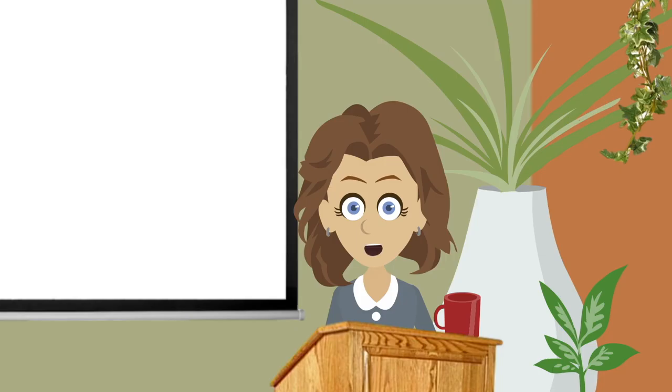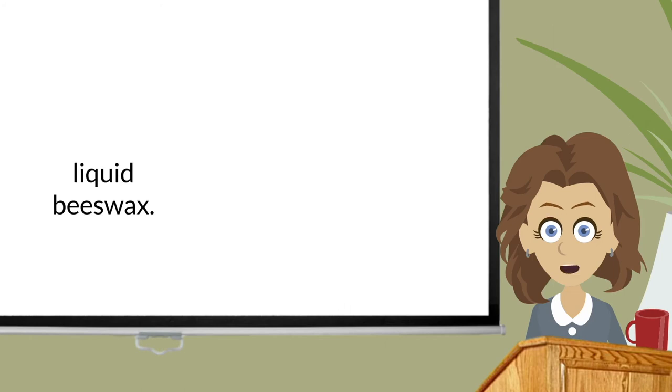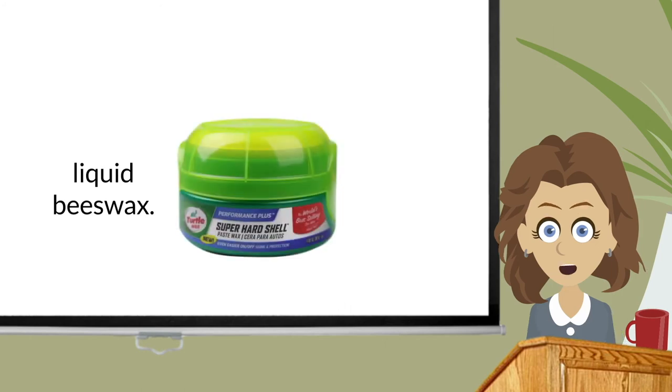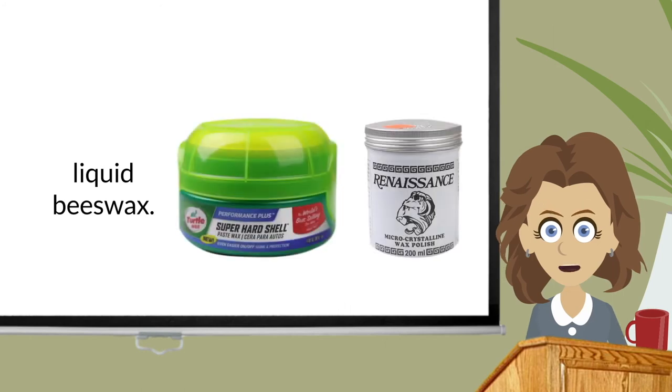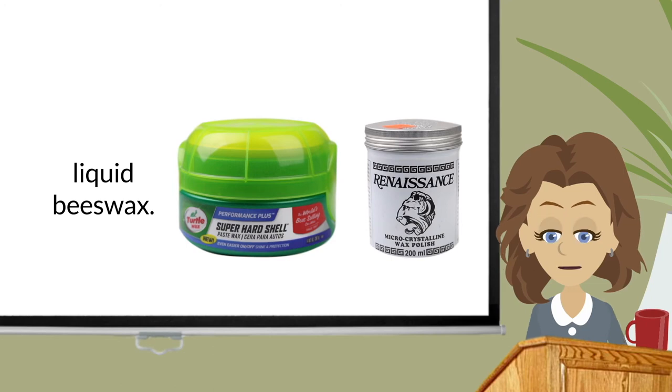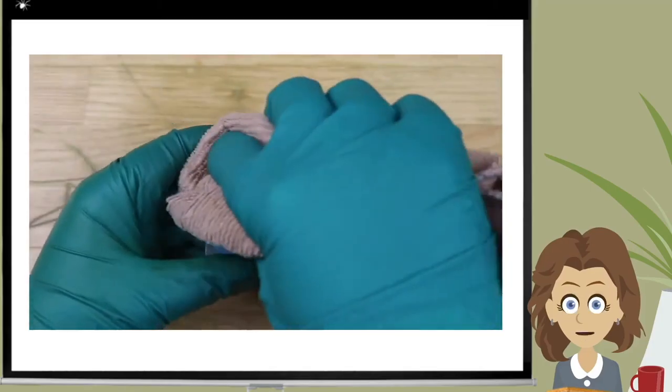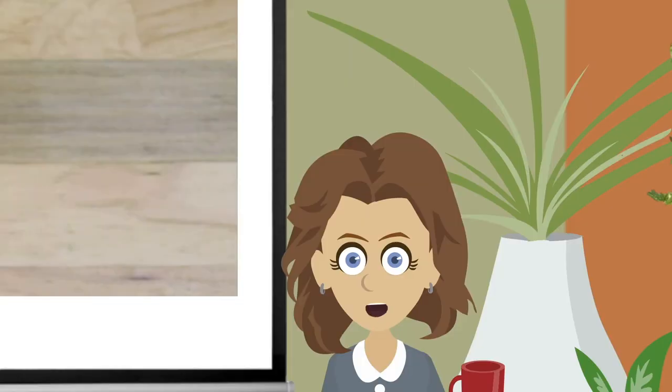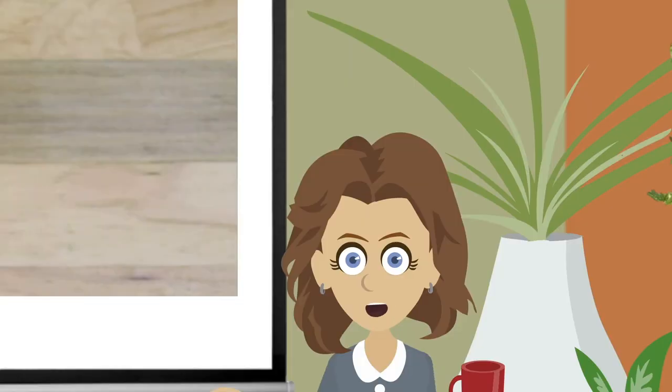Paste waxes are a very traditional way to seal patinas. Liquid beeswax, super hard shell turtle wax, or my favorite Renaissance wax polish will all do the job quite nicely, but are not as hardy as spray or paint-on lacquers. And not so good for fragile patinas or patinas with lots of nooks and crannies. Gently rub on with a dry, soft cloth. Allow to dry for about five minutes.